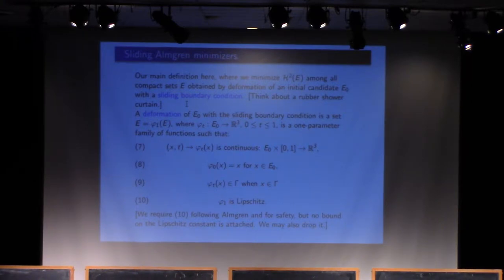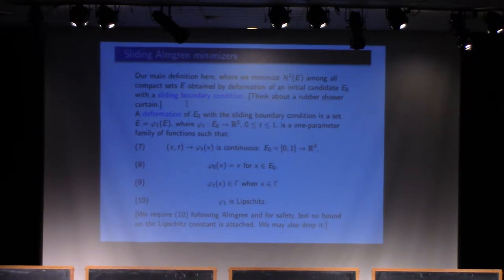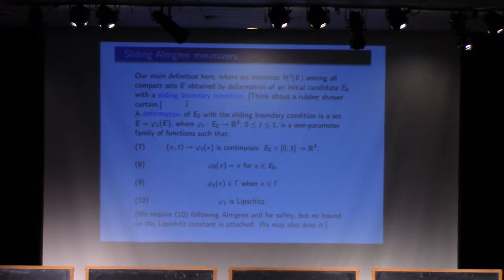We are given a set E₀, and we will try to minimize Hausdorff measure among deformations of E₀. I will have to explain what I mean by a deformation of a set E₀. There is also a boundary curve gamma. You start from a candidate and try to look at all possible deformations of that candidate. The deformations will be obtained as images at the end of a one-parameter family of deformations of E₀.